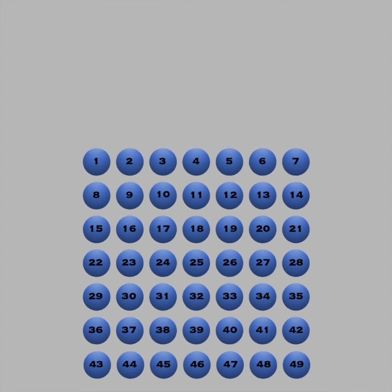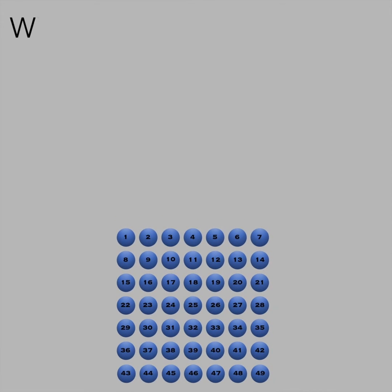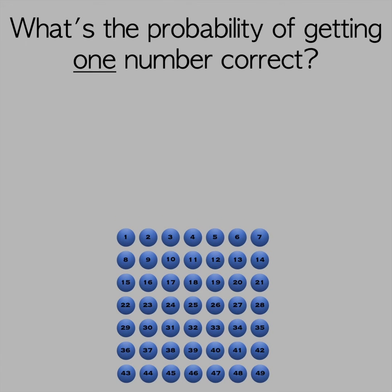To work out the probability step by step, let's first pretend only one number is drawn by the lottery. What is the chance that you'll choose correctly? It's 1 in 49.